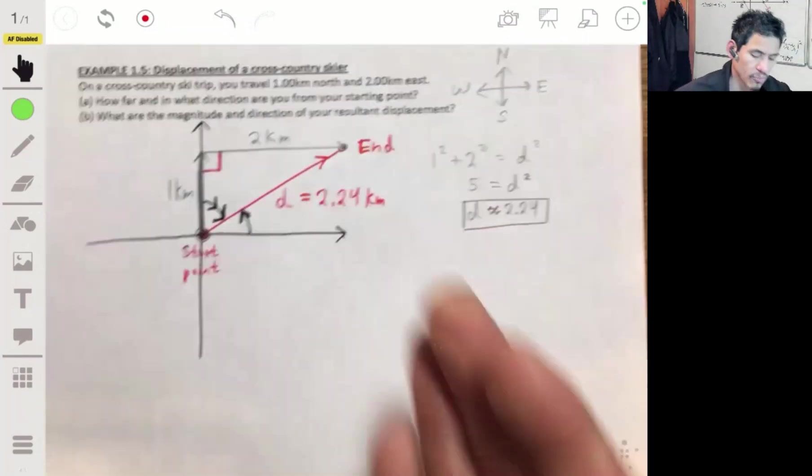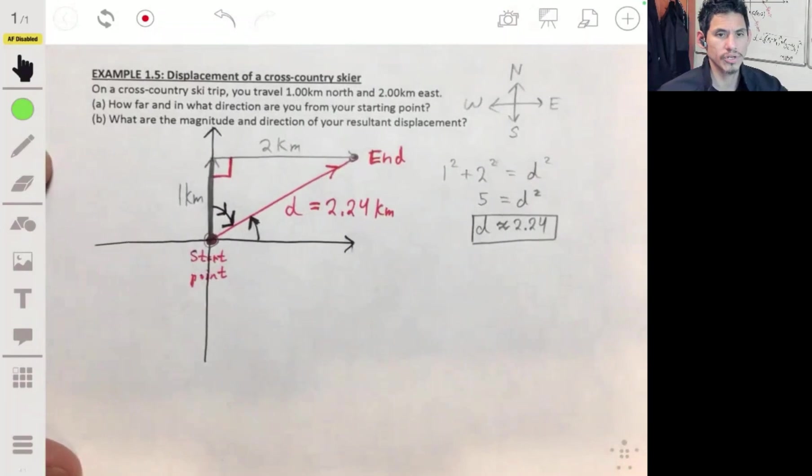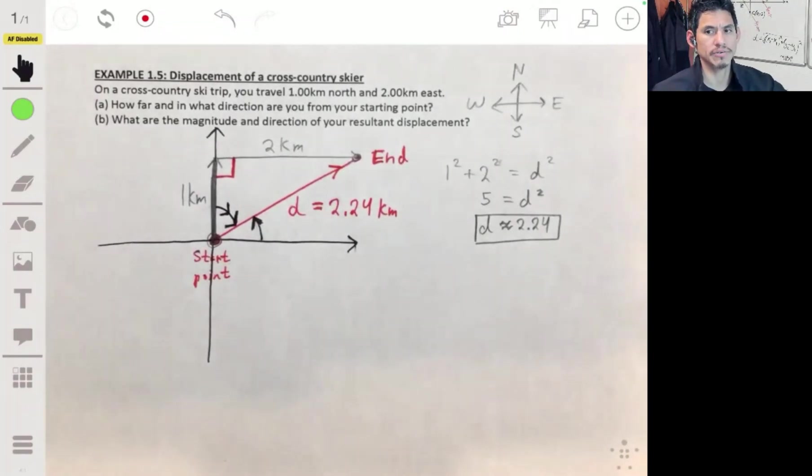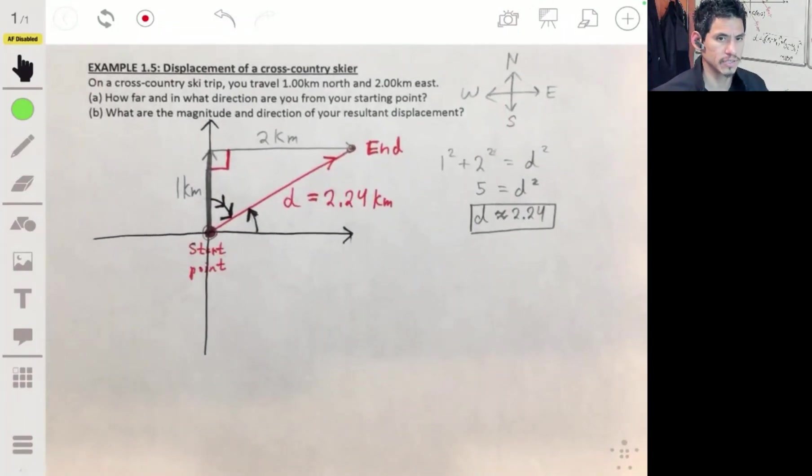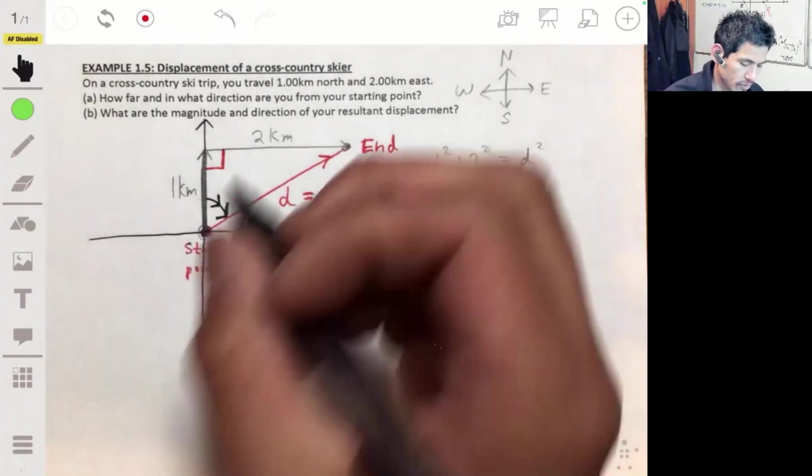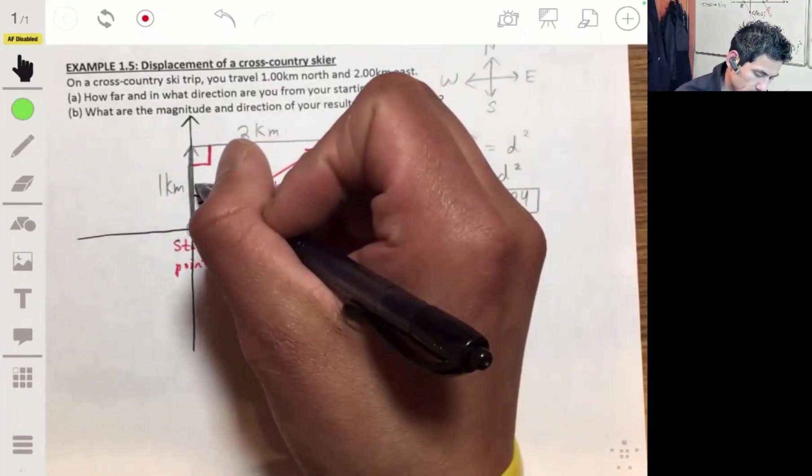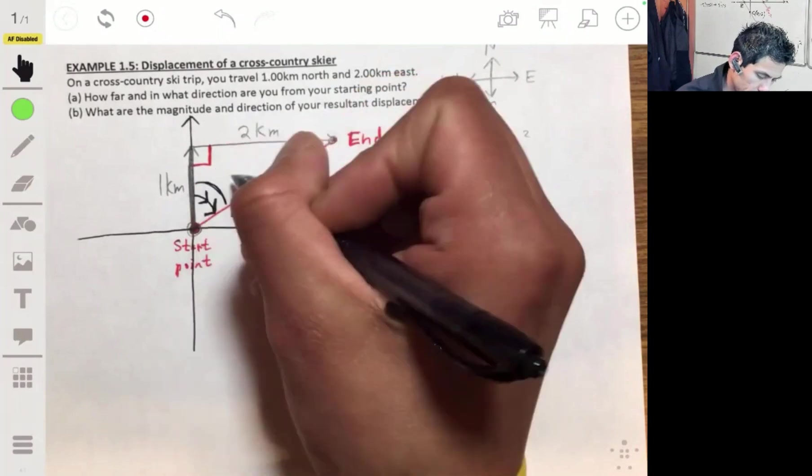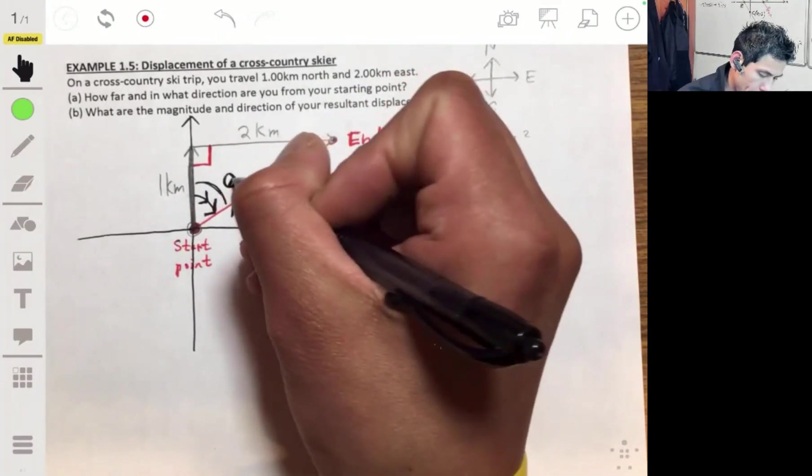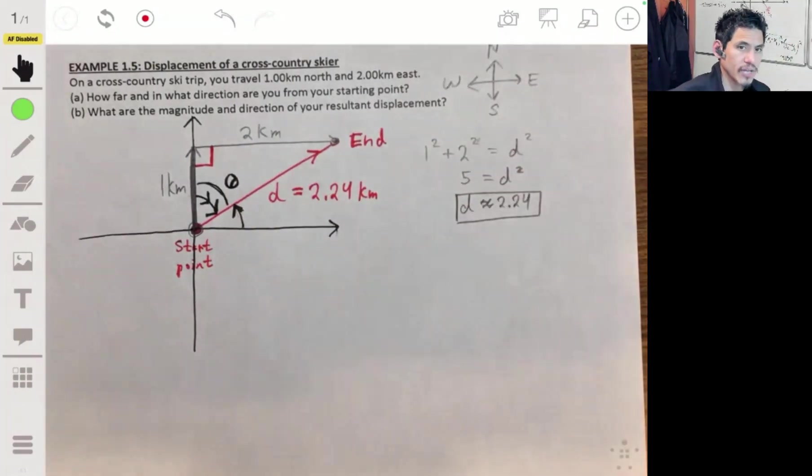Now, depending on which one you find, the way you're going to word it, the way you're going to say direction is going to be a little different, which I'm going to explain in just a minute. But let's first go over how do we find this. Let's look at this angle up here. Let's call that one theta. What's the value of theta?